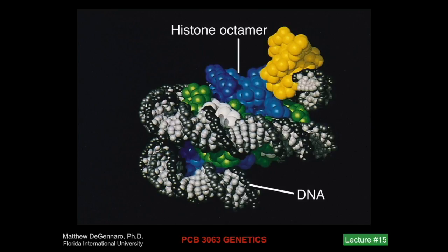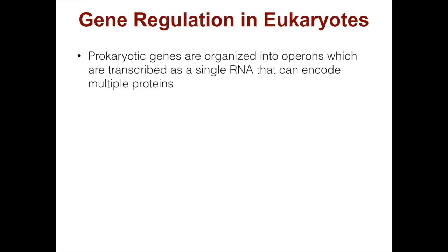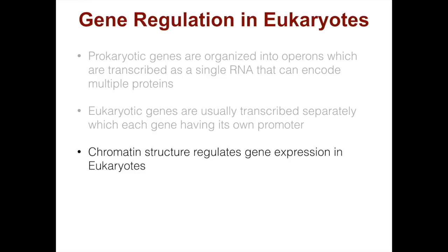There are many important differences between gene regulation in eukaryotes and prokaryotes, which is what we discussed in the previous lecture. Prokaryotic genes are organized into operons, which are transcribed as a single RNA that can encode multiple proteins. Eukaryotic genes are usually transcribed separately, with each gene having its own promoter. Chromatin structure, which includes the nucleosome, regulates gene expression in eukaryotes.